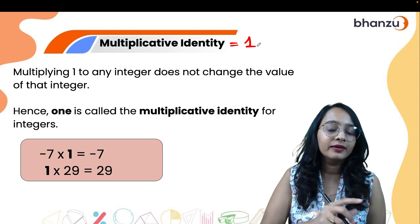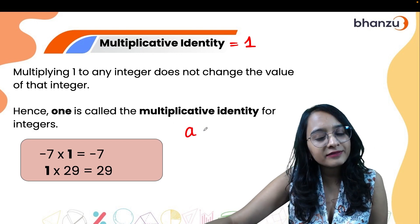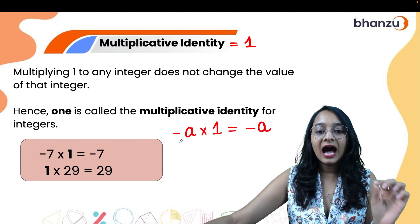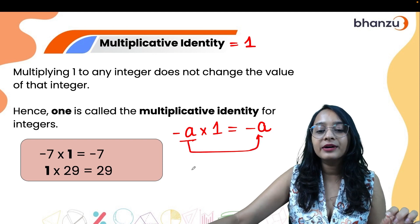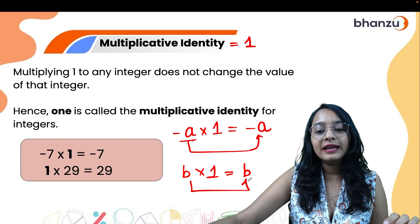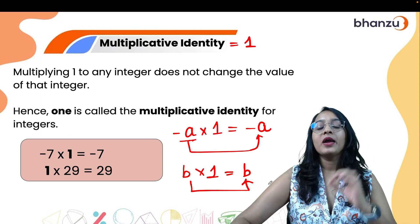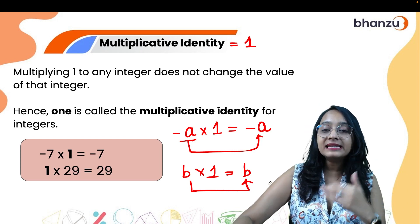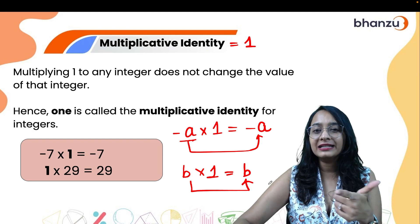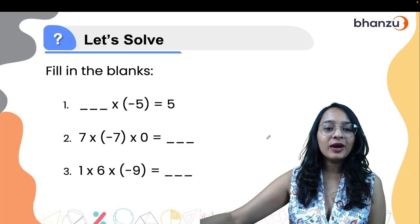Now comes multiplicative identity, which is always the number one. Whenever you multiply any number — positive or negative — by one, the identity of the number remains the same. That is why one is called the multiplicative identity. Remember we also studied additive identity, which is always zero.